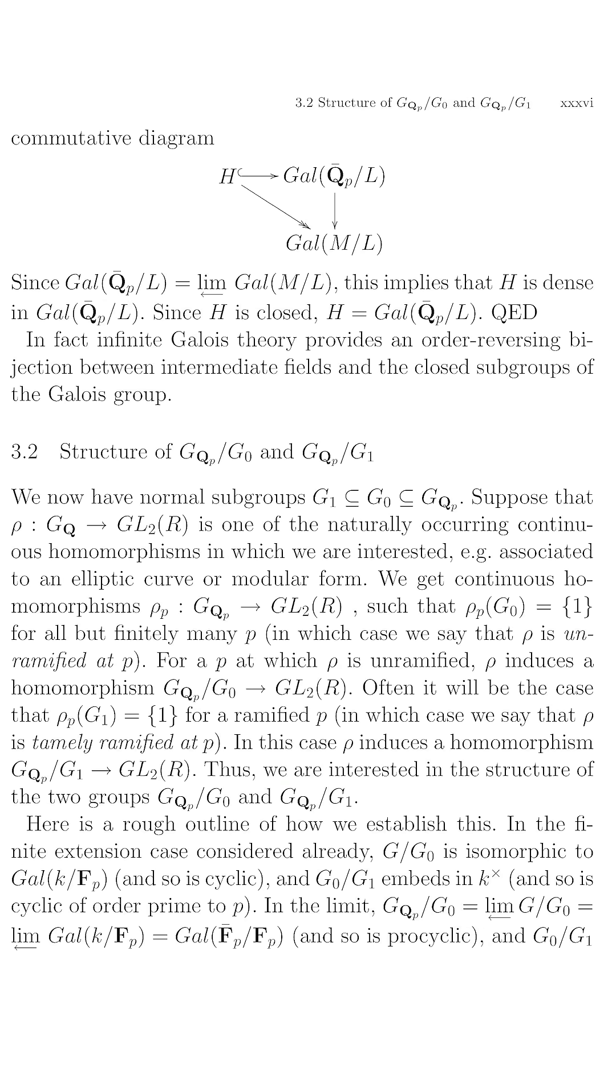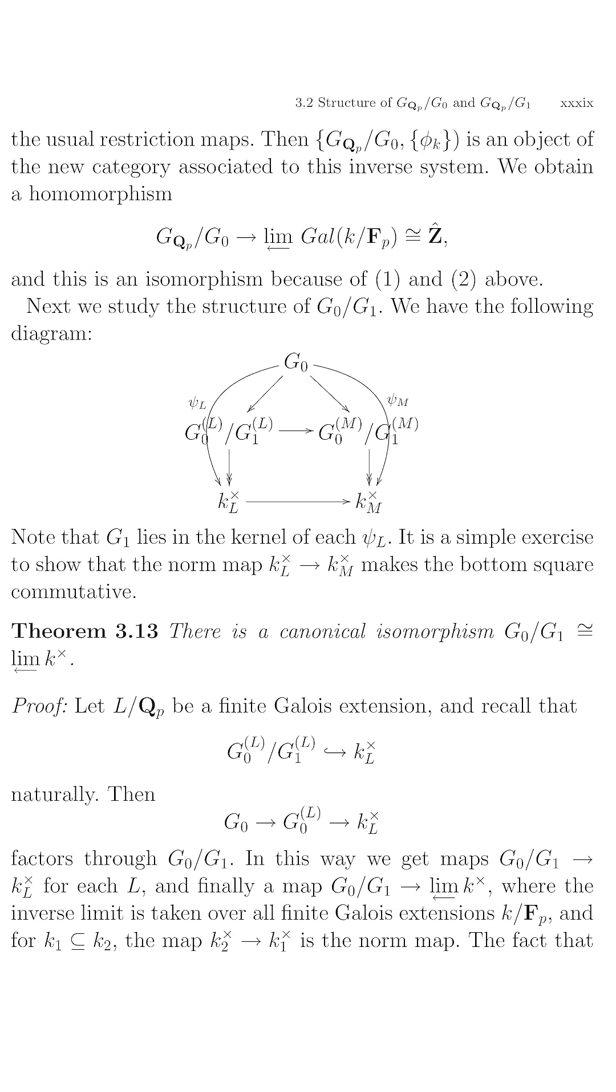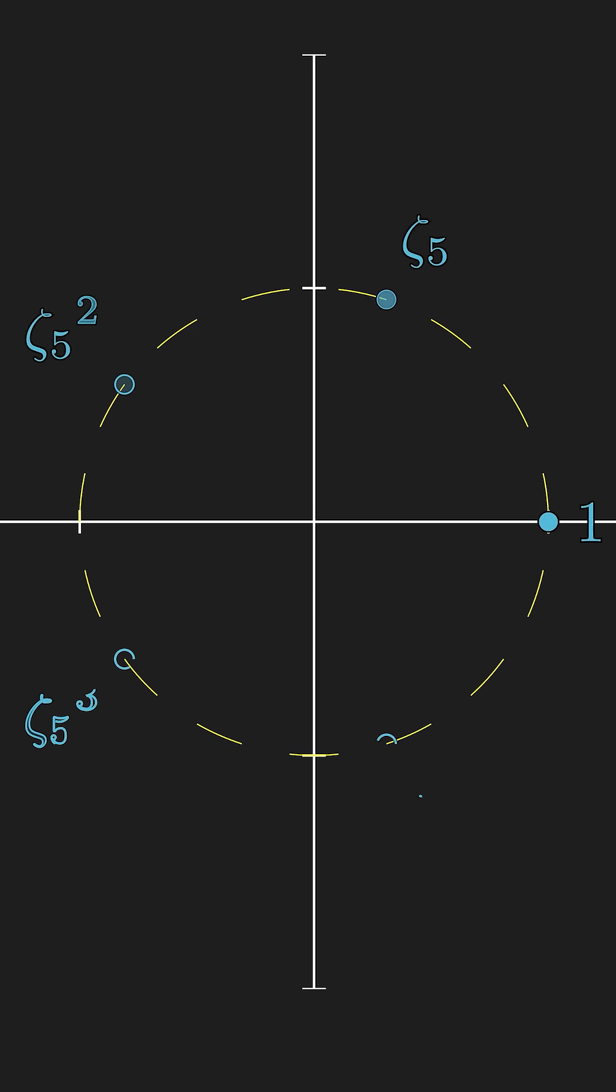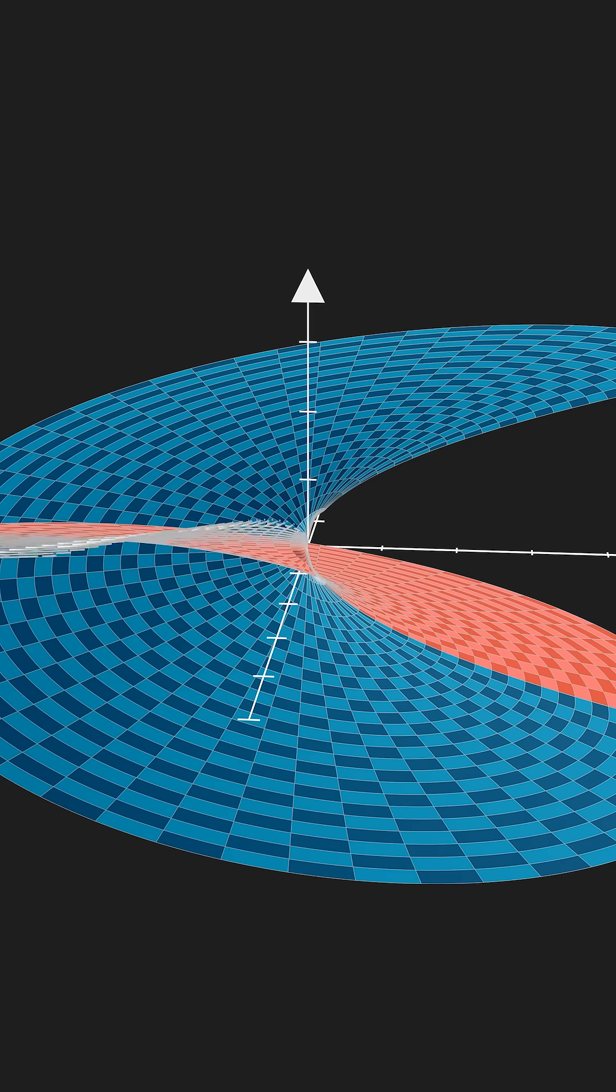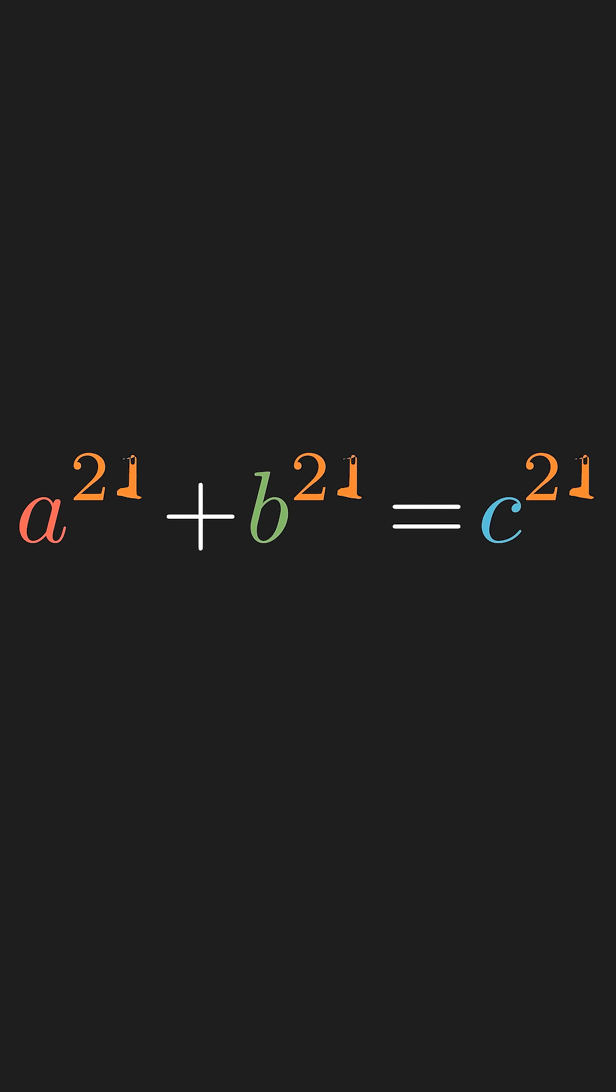And in order to solve the problem, numerous new branches of mathematics were invented. Many of the early attempts at solving the problem involved inventing new number systems. And the theorem was proved for every number up to 37 by 1847.